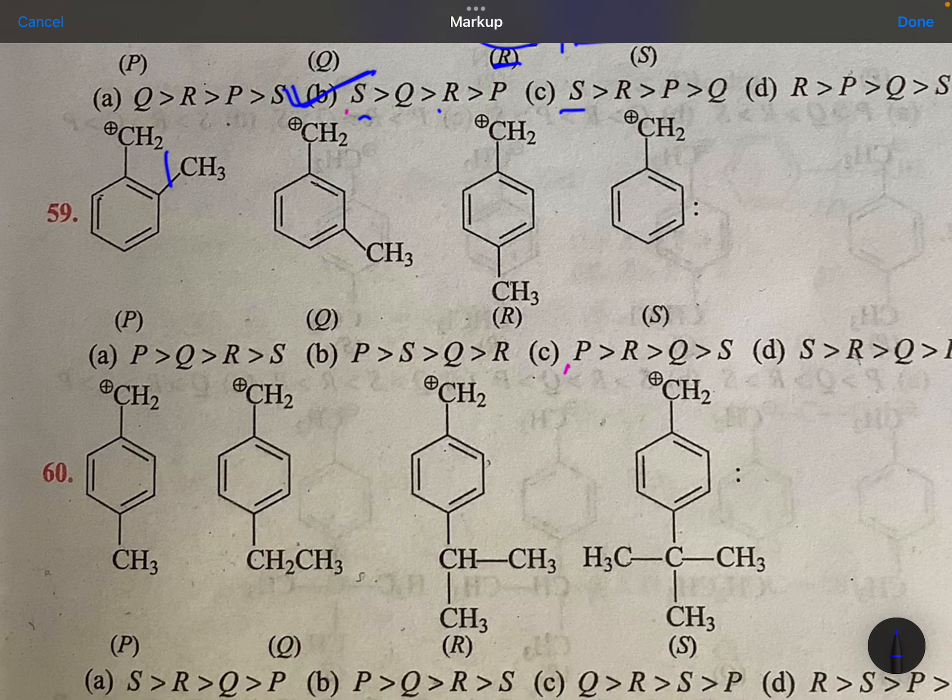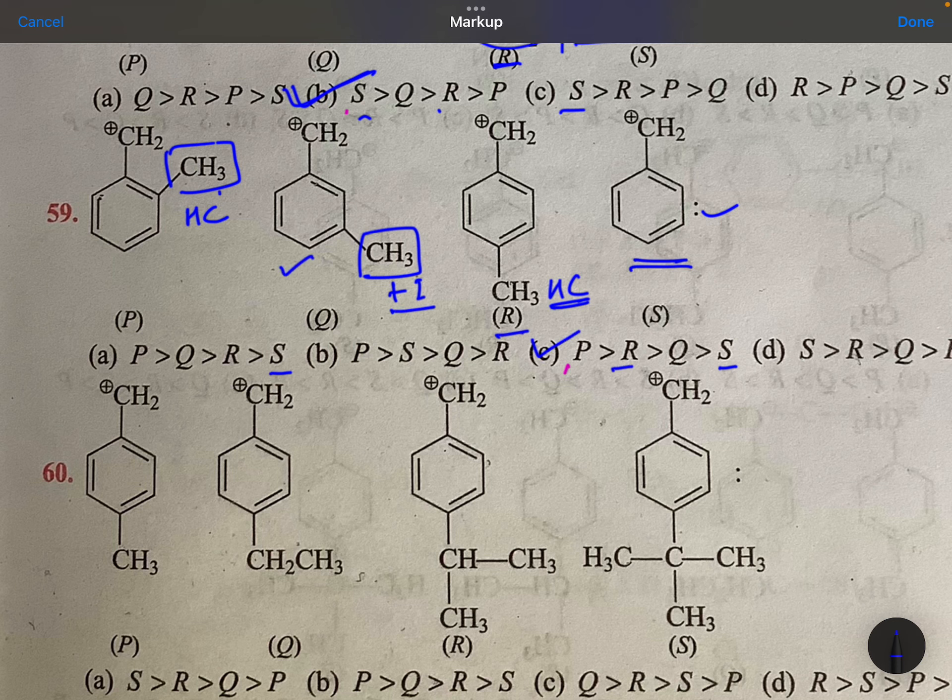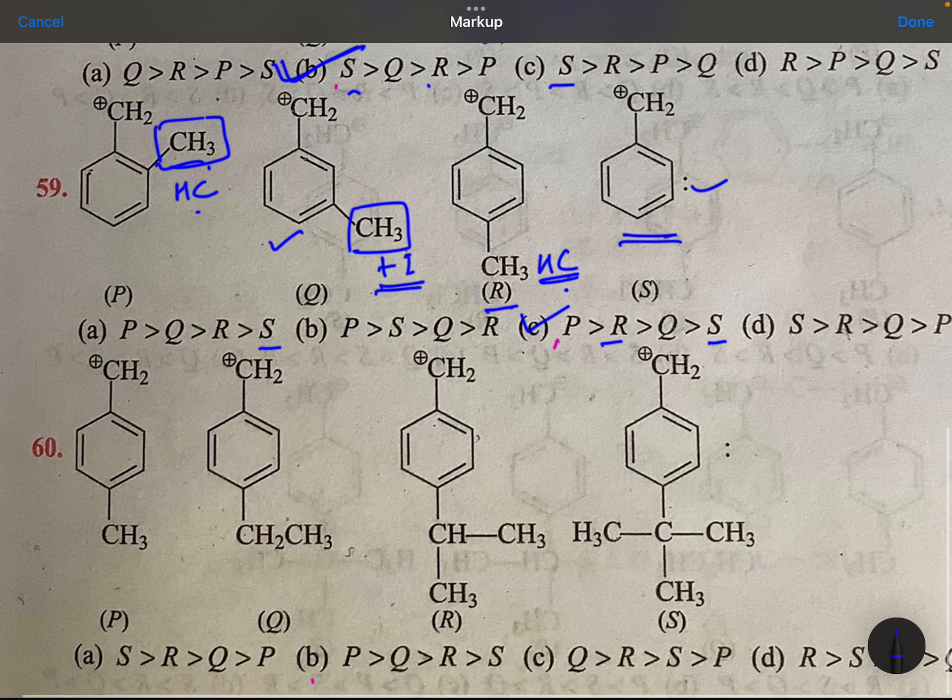Now methyl group is best, but not at this position. Because here hyperconjugation is possible, here only inductive effect, here hyperconjugation is possible but little away. It is close, and here no effect. So methyl is best, so it should be least. S must be least. How many are least? Two options are there. In that, P is best, followed by R, then Q, then S. Because here only inductive, in this case hyperconjugation plus inductive. Inductive when it is close is more pronounced, so this option.